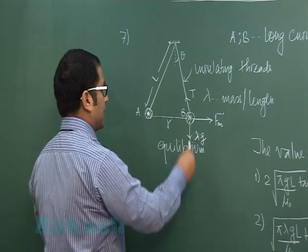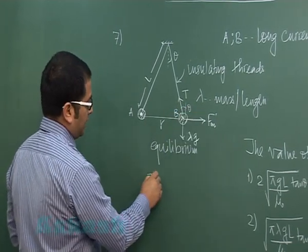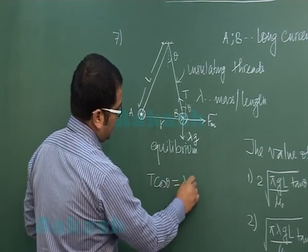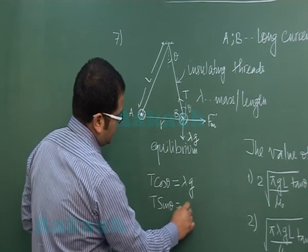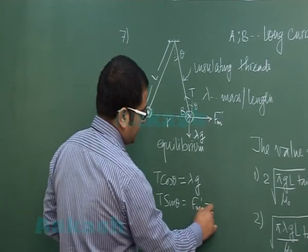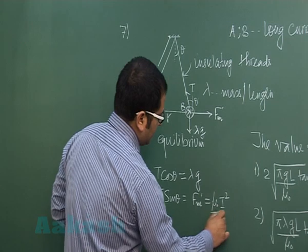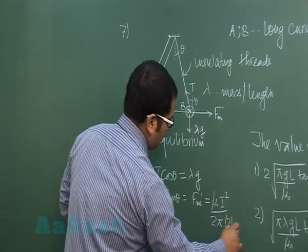Since it is in equilibrium if this is theta this angle can be written to be T cos theta is lambda times G and T sin theta is magnetic force per unit length which is mu naught I1 I2 that would be I square by 2 pi R is the separation that's 2L sin theta.